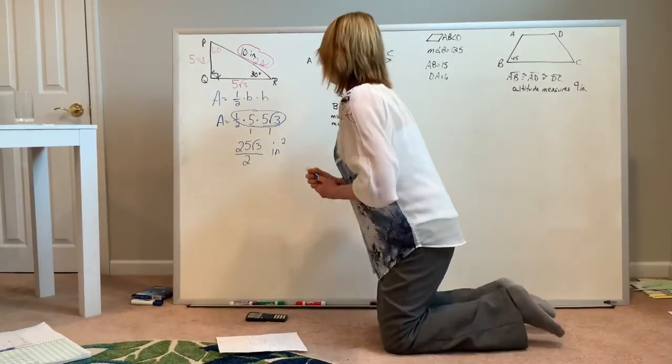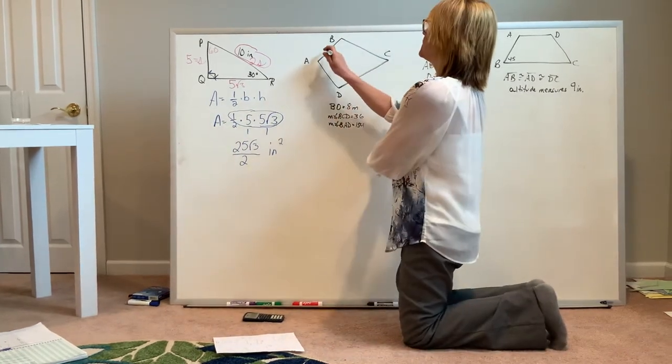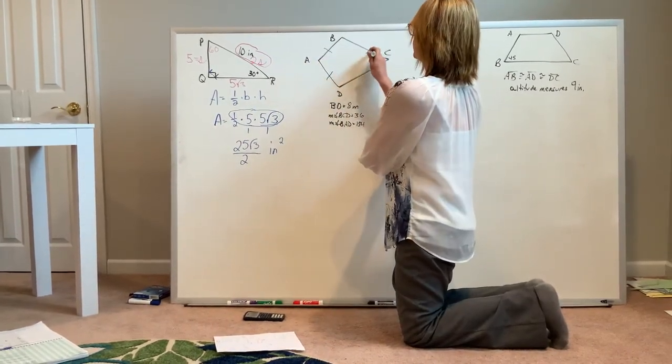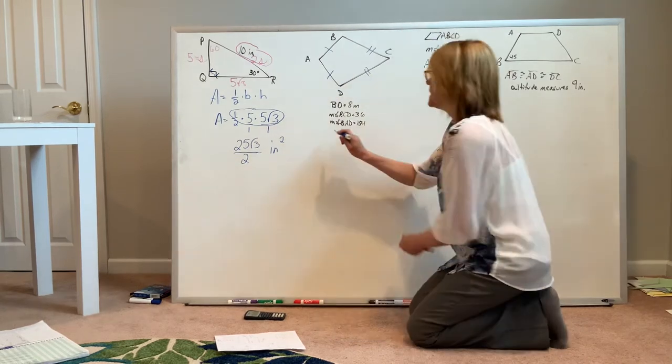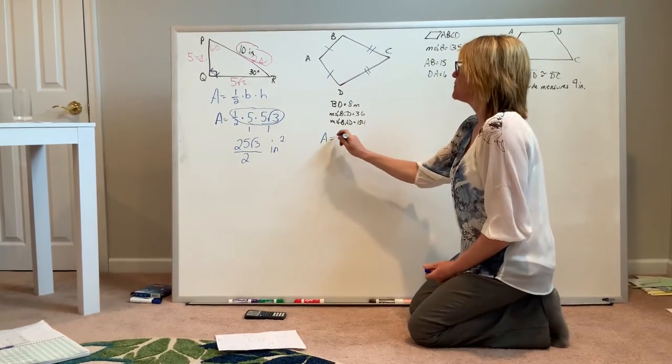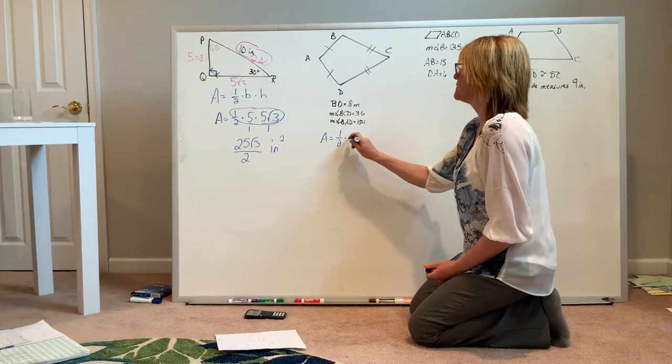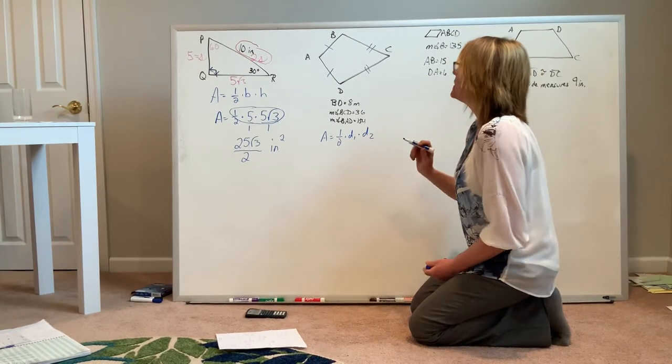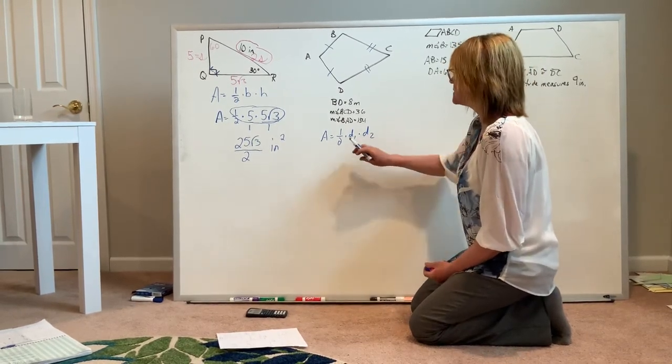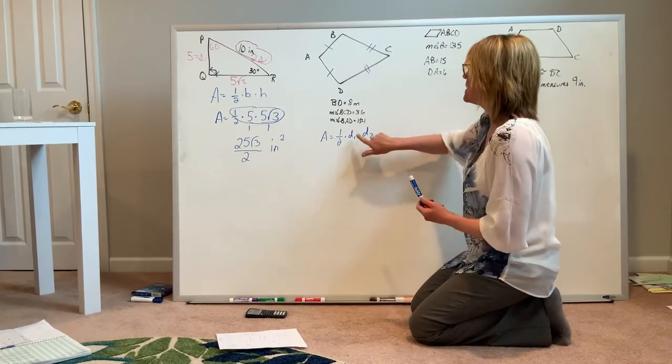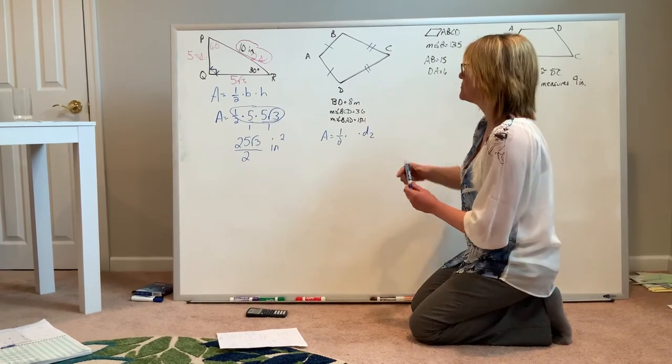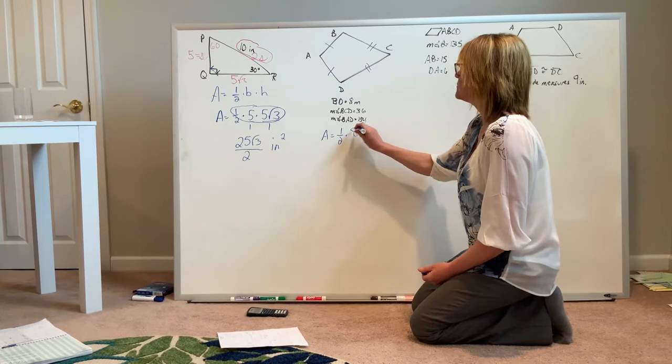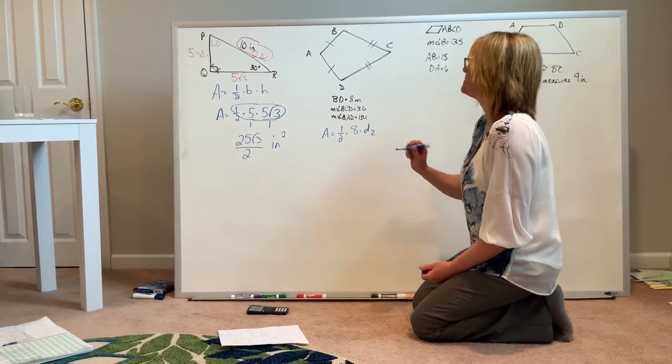For our second example, this time we're looking at a kite. In a kite, the area is equal to one half times the length of the first diagonal times the length of the second diagonal. Our given information includes the length of one of our diagonals, so I'm immediately going to replace D sub 1 with the length of BD.